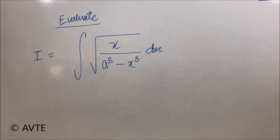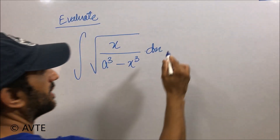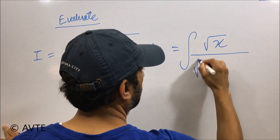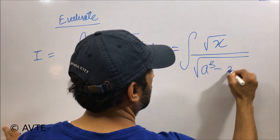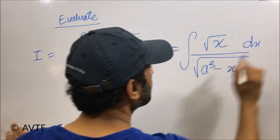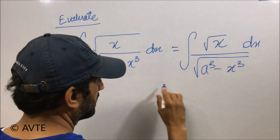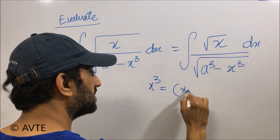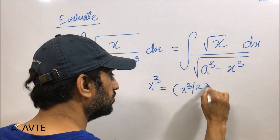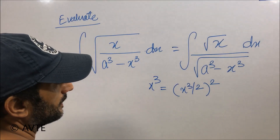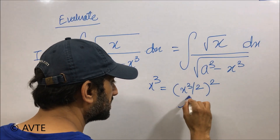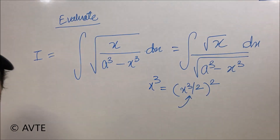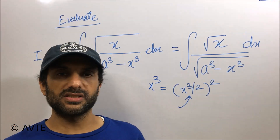That can be done only by practicing or looking at newer questions. You can break this into two parts, and the little trick in this question is that we can take x cube as x cube by 2 the whole square. With that, we can put x to the power 3 by 2, and that is the derivative of the numerator. Now we do it systematically.